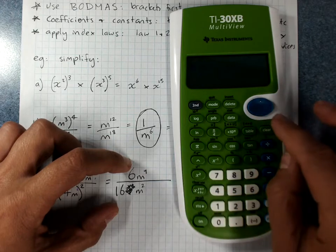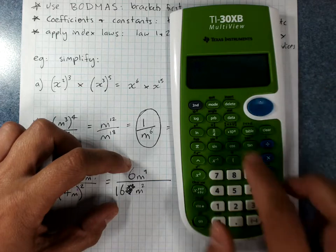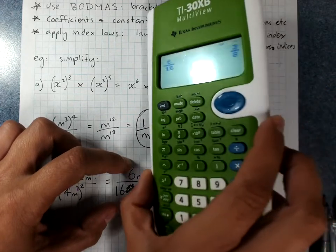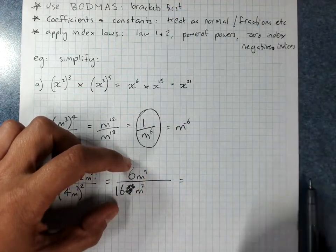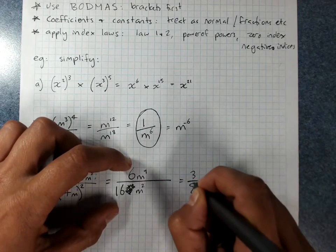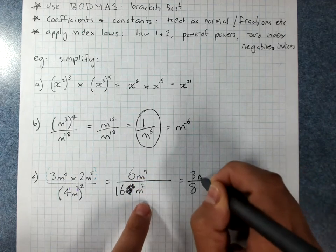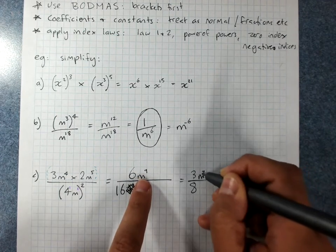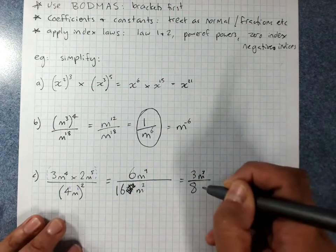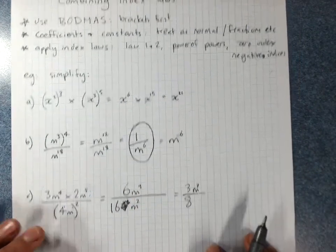oh, excuse me, 3 over 8. That simplified the whole number fraction part for you. Then m9 over m2, that's m7 left on the top because the majority of the m's are on the top. 3m to the power 7 over 8. Sorry about my dodgy writing there. So that's combining index laws.